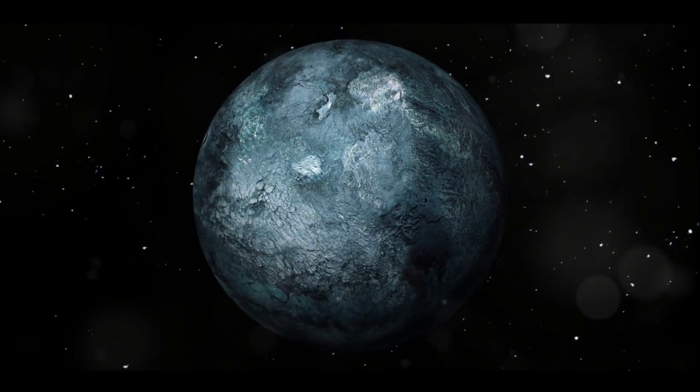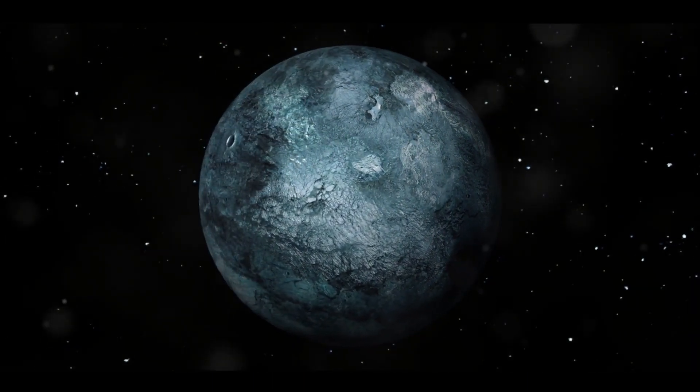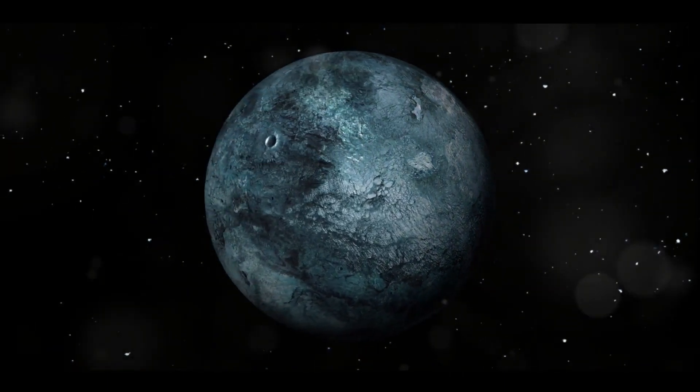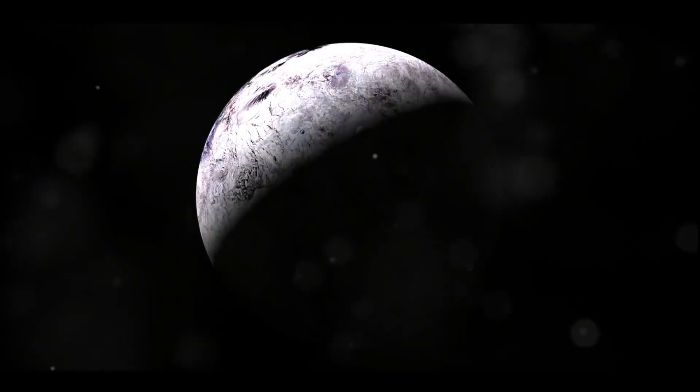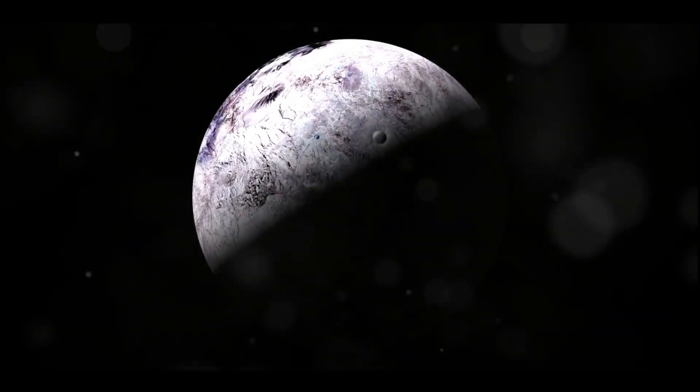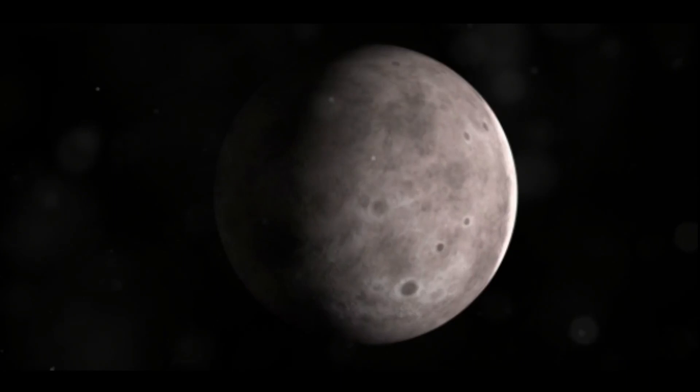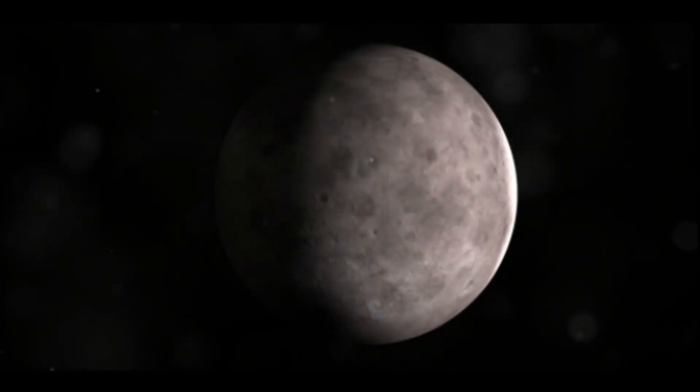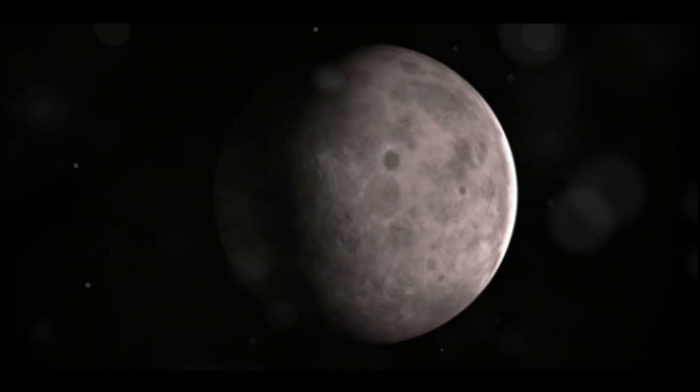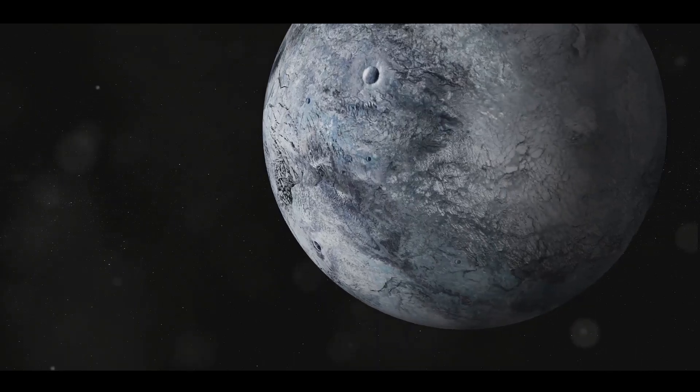The discovery of Eris was a pivotal moment in our understanding of the solar system. Why? Well, it all came down to size. You see, Eris is slightly larger than Pluto, which had long held the title as the ninth planet in our solar system. This posed a conundrum for astronomers. If Eris was larger than Pluto and shared similar characteristics, shouldn't it also be classified as a planet?